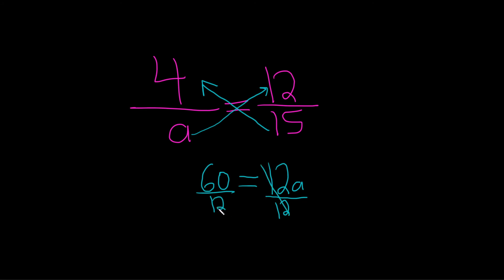These cancel. So 12 goes into 60 five times, and then we're left with the A. The last thing to do is write the A on the left. So A equals the number 5, and that would be the final answer.